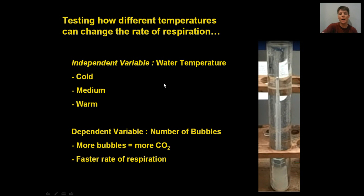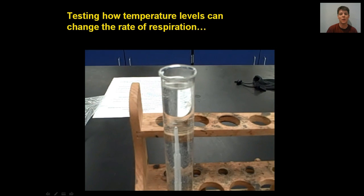Our dependent variable will be the number of bubbles produced by the yeast. The bubbles will be given off by the tip of the pipette right here. More bubbles means that the yeast are producing more CO2. They're carrying out respiration at a much faster rate.